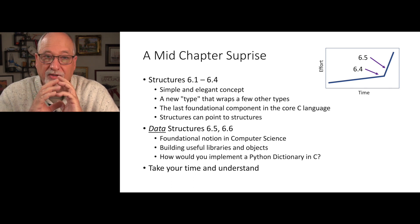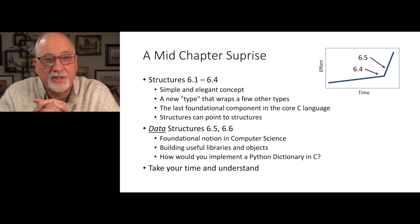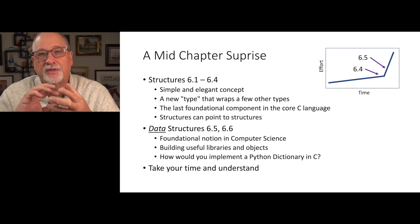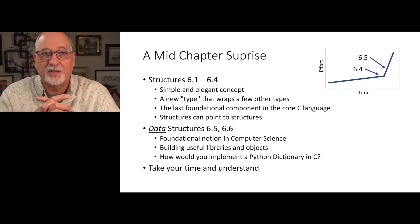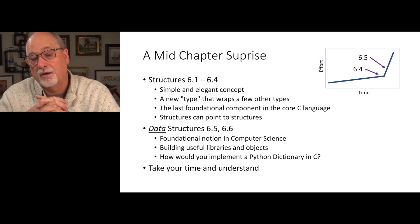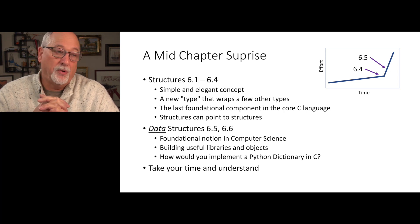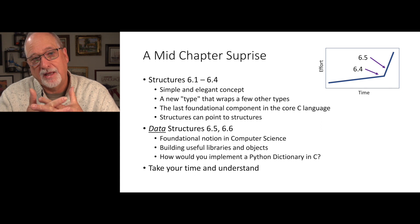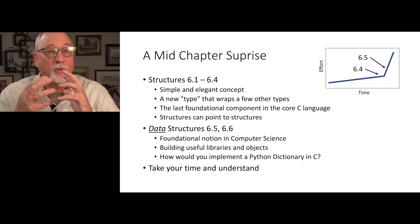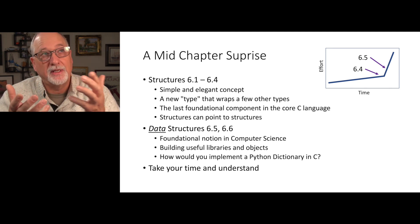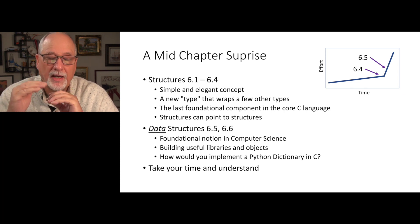Data structures are the foundational notion in computer science — things like how do you build a Python dictionary in C. This is a pattern we call the knee of the curve, where things are going along just fine up to 6.4. Like, oh, here's a for loop, here's a string, here's an array, here's even a pointer — that's not that hard, and structures are not that hard. But when we start talking about applications of structures, what we call data structures, it's quite a next-level thing.